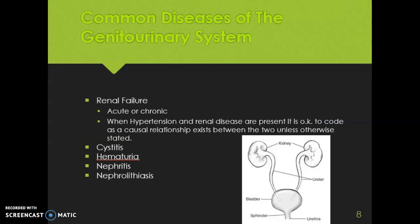Now for common diseases of the genitourinary system. As a coder, you will commonly see patients with renal failure, which can be acute or chronic. When hypertension and renal disease are both present, coding guidelines tell us to code them as a causal relationship unless the physician documents otherwise. Other conditions include cystitis (inflammation of the bladder), hematuria (blood in the urine), nephritis (inflammation of the kidneys), and nephrolithiasis (kidney stones).